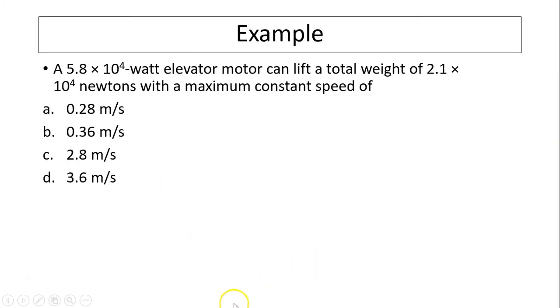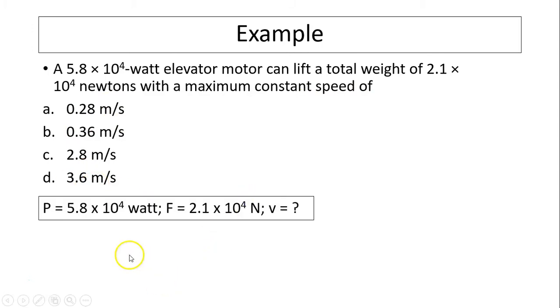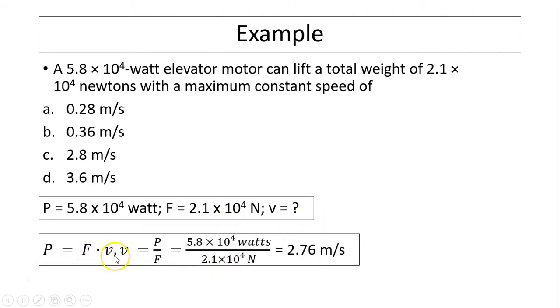Let's take a look at another example. A 5.8 times 10 to the 4 watt elevator motor can lift a total weight of 2.1 times 10 to the 4 newtons with a maximum constant speed of what? So we know the power, we know the force, we're trying to find the speed. So you have to use this equation: Power equals force times v. So to solve for v, v equals power divided by force. So power divided by force is 2.76 meters, which is closest to 2.8 meters per second.